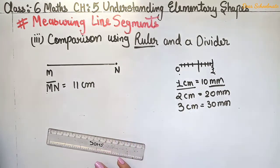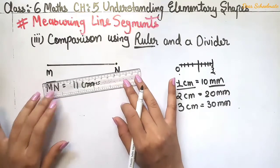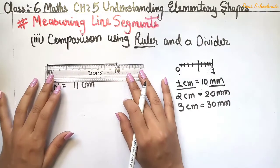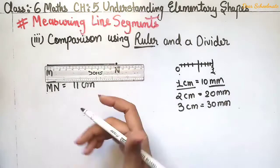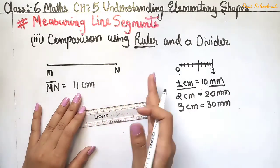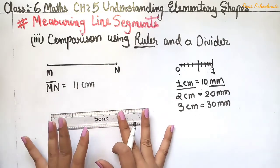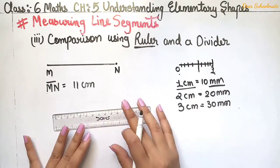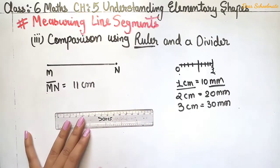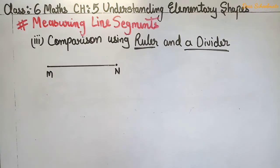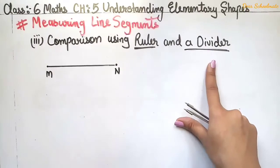The disadvantage of using only a ruler is that it can be difficult to align the scale exactly at 0 for the starting point. This can introduce errors in measurement. So now let's see the next method — comparison using a ruler and a divider.